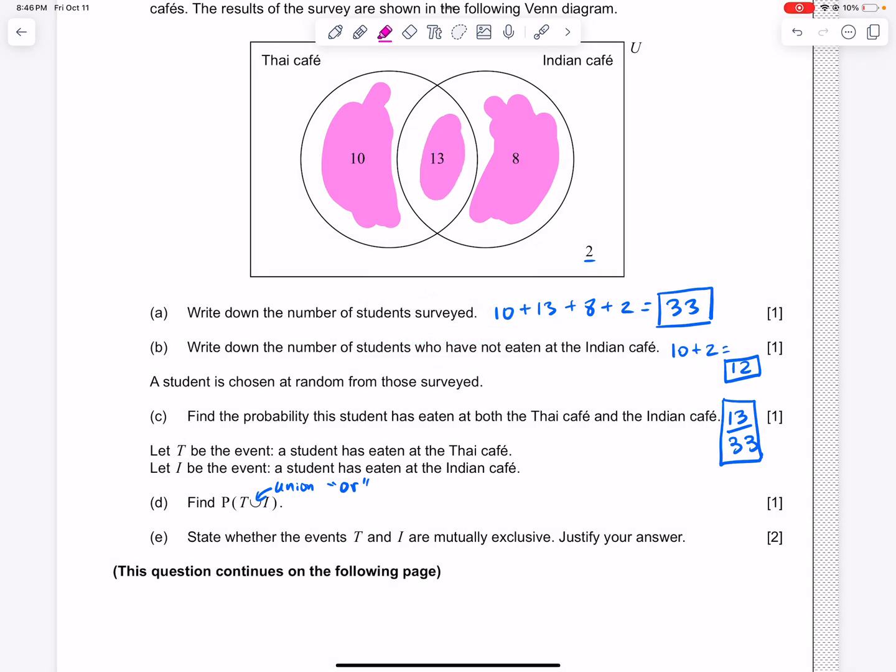Thai Café or Indian Café means Thai Café or Indian Café or both. So this is T union I. So that's everything. Thai Café or Indian Café or both. Thai Café union Indian Café. So we're going to be adding up here or 10 or 13 and or 8. And don't forget that this is probability. So it has to go over our total, which is 33. So here we have 31 over 33.